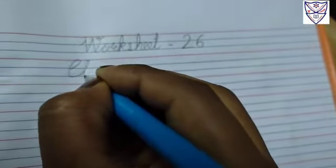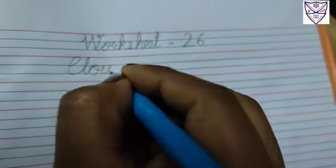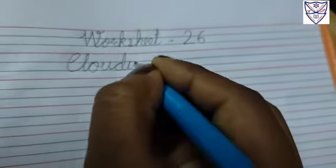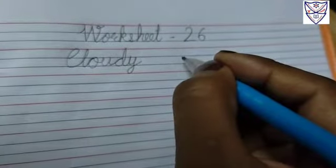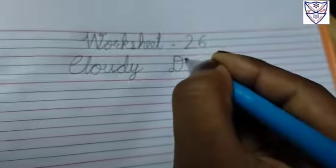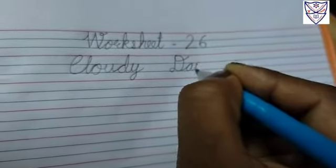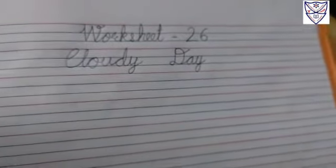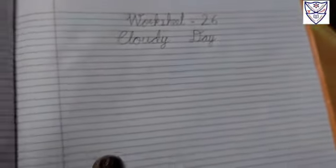Capital C, small L-O-U-D-Y. Cloudy day. Capital D, small A-Y. And now from the new line start writing.